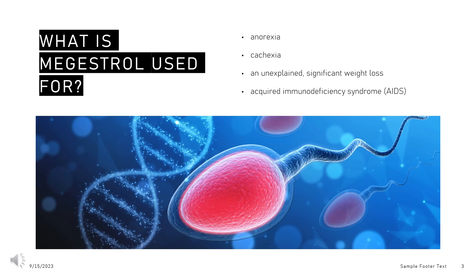What is Megastrol used for? It is used for the treatment of anorexia, cachexia, or unexplained significant weight loss in patients with a diagnosis of acquired immunodeficiency syndrome (AIDS). It is also used for the palliative management of recurrent, inoperable, or metastatic breast cancer, endometrial cancer, and prostate cancer in Canada and some other countries.